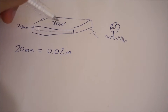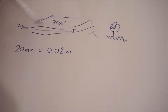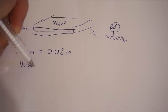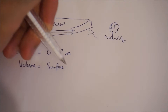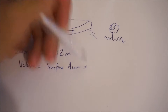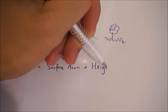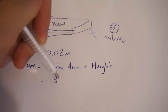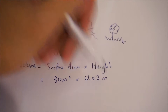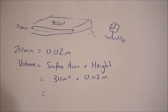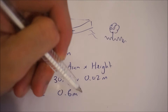Now all I have to do is calculate the volume of water collected on the roof. The volume of any shape is essentially the surface area multiplied by the height. In this case, my surface area is 30 square meters and my height is 0.02 meters. If I multiply those together, I get 0.6 cubic meters.